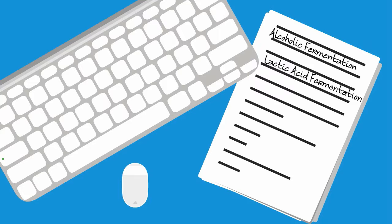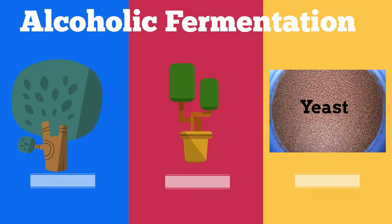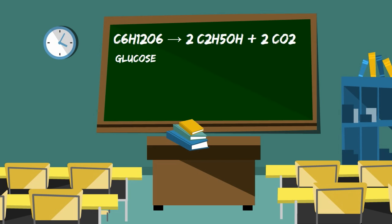The first type, alcoholic fermentation, occurs in plants and yeast when oxygen is not present. The cell takes glucose, technically pyruvic acid, and it is converted into ethanol, which is a type of alcohol, plus carbon dioxide and energy.